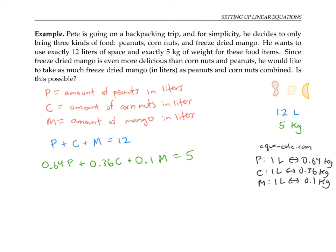The third and final condition is that Pete wants to take as much freeze dried mango in liters as peanuts and corn nuts combined. So to write that as an equation, I'm going to write that mango liters is equal to peanut liters plus corn nut liters. So now I have three equations in three variables, a nice system of equations.